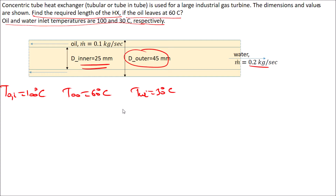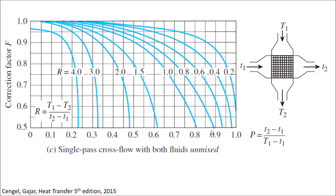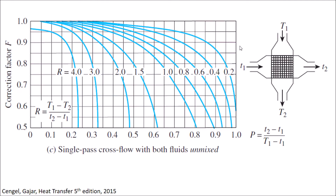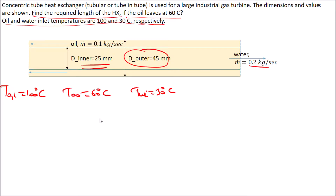This is a sizing problem. For sizing problems we use specific equations. If it is a temperature or rating problem, different relations apply. The unknown here is the water outlet temperature, which we will find first. Then we will use Q = U·A·F·LMTD. F is one, and from the area we will get the length of the heat exchanger.